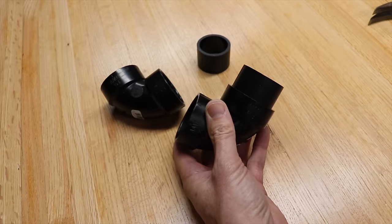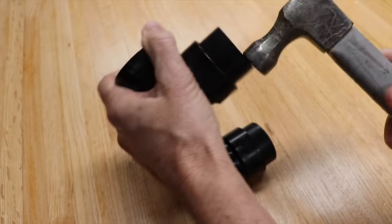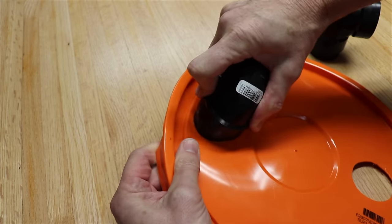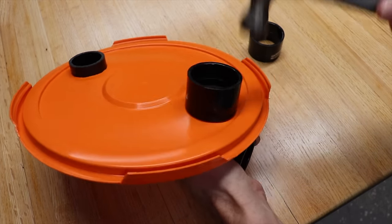Now take your two short pieces of pipe and bang them in. I find that a resistance fit works fine but if you want to use glue go ahead. Now pop them both into the lid. Flip it over and bang on the last two straight couplers.